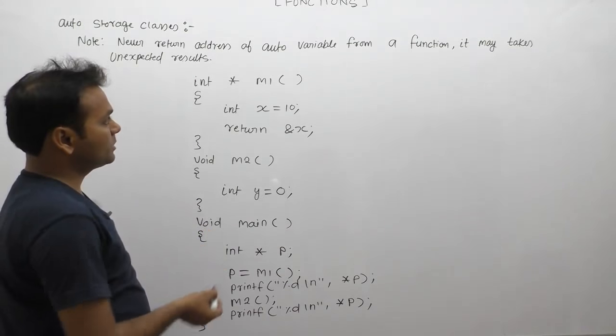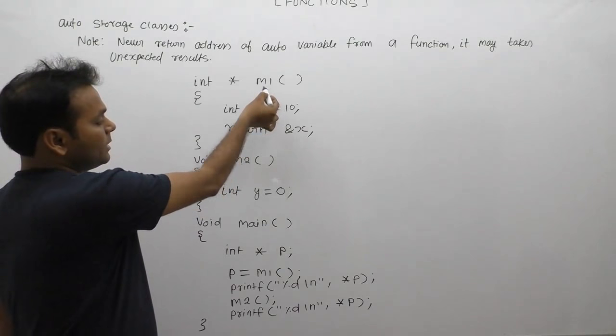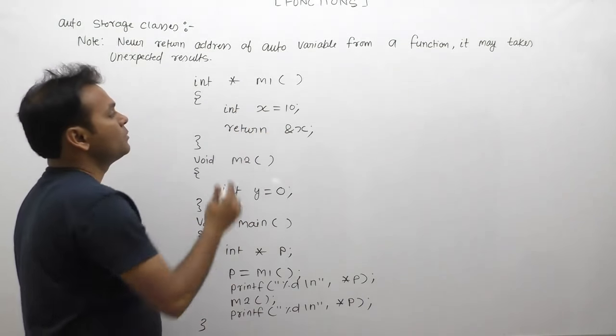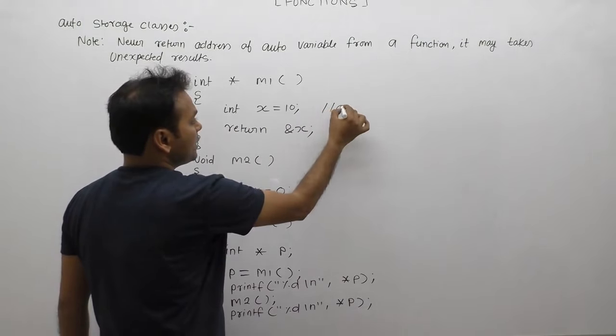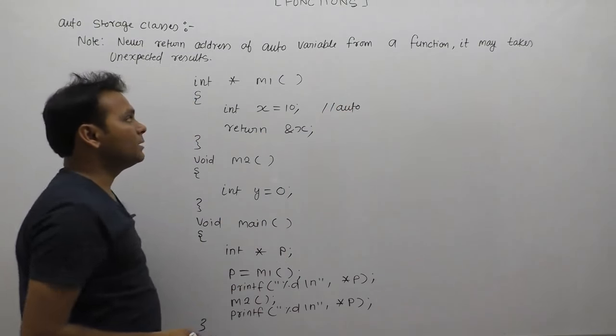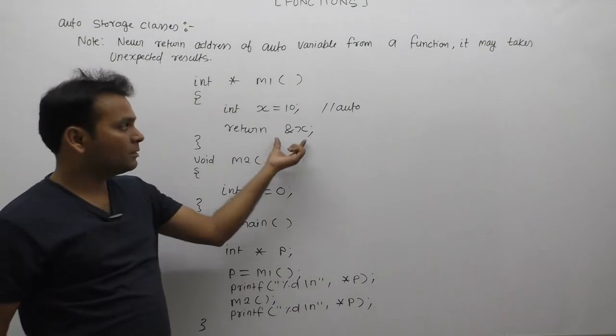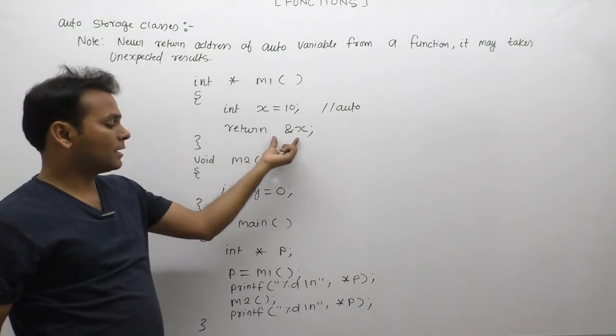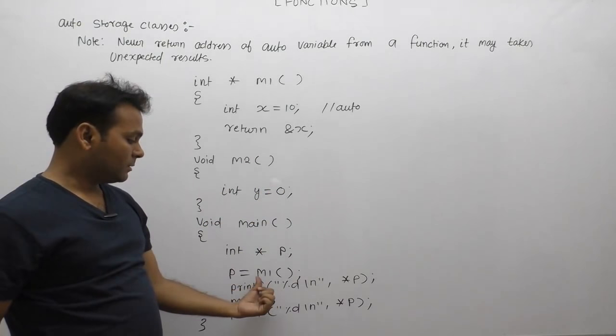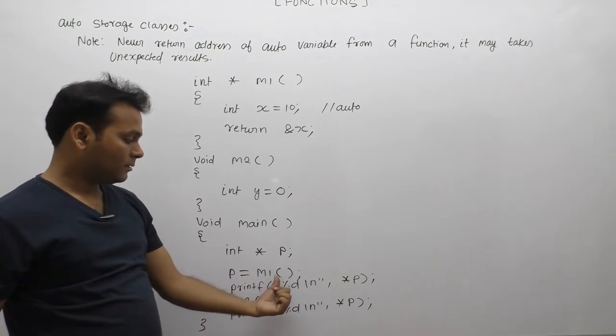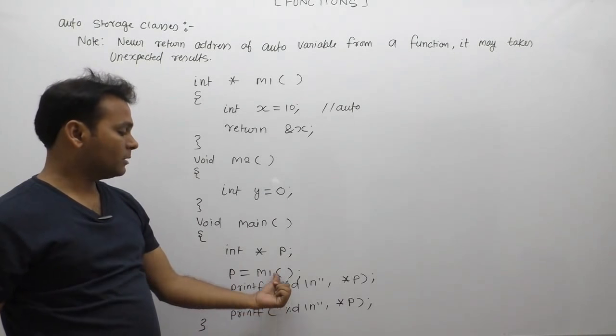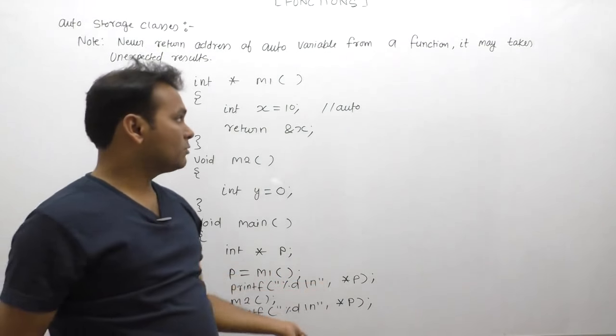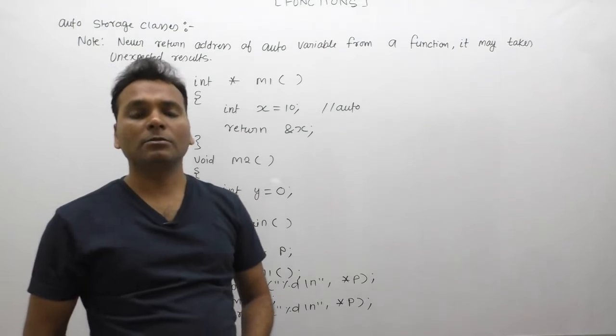In this case we are defining two functions, m1 and m2. M1 will be returning address of x, where x is an auto variable. By default, x's storage class is auto. In this case, m1 function returns address of auto variables which may cause unexpected behavior. From main we call m1, and the return value of m1, as we know, will be the address of x.